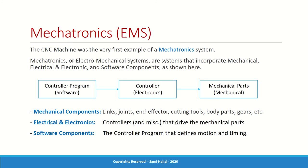We mentioned mechatronics earlier, so let's talk about that term. The CNC machine was the very first example of mechatronics or electromechanical systems. Mechatronics is two words in one — mechanical and electronics. Electromechanical systems could also include electrical as well. Regardless of the terminology, the meaning is the same: a system that involves three different components.